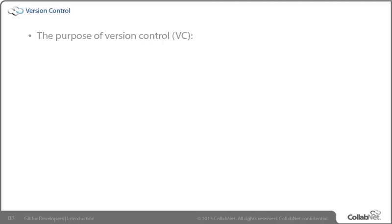Version control tools basically have two basic purposes. First, they serve as a historian. They tell us who did what to what files and folders, when they did that, and what they said about it — which hopefully tells us why they made those modifications. That means we can harvest history to understand how we got to a certain point, as well as actually transport ourselves back — a la the time machine — to a point in the past, where we can examine the code, roll back to a version, and compare versions.